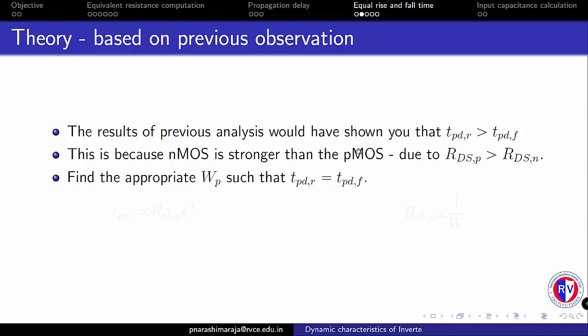From our first order RC delay time model we found that the propagation delay is proportional to the channel resistance. So the way to reduce TPDR is to reduce the resistance of the PMOS. One can achieve this by increasing the width of our PMOS, since the channel resistance of a MOSFET is inversely proportional to the width. Also, while varying the PMOS width, one has to be aware that it is not just the TPDR that will be affected but TPDF will also be affected. The reason for this could be read from your RABI textbook.